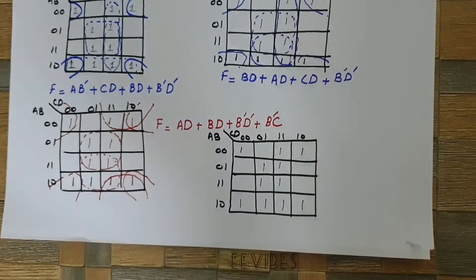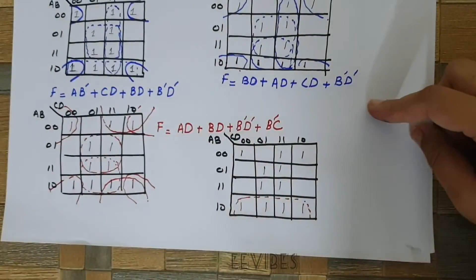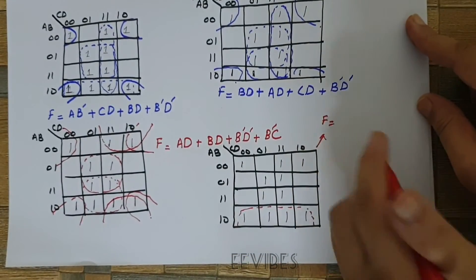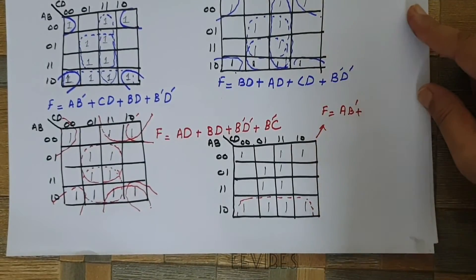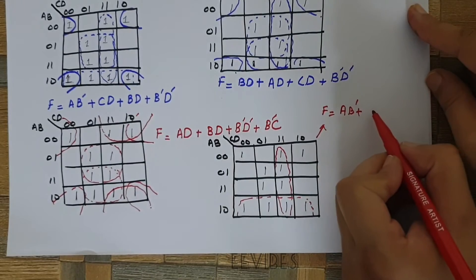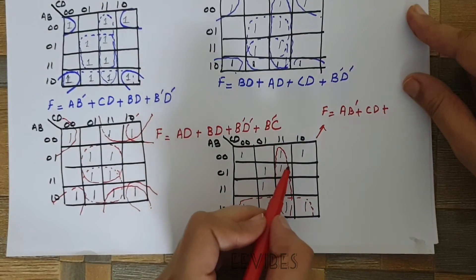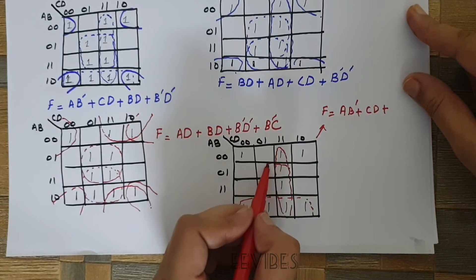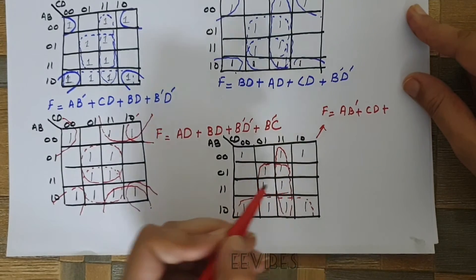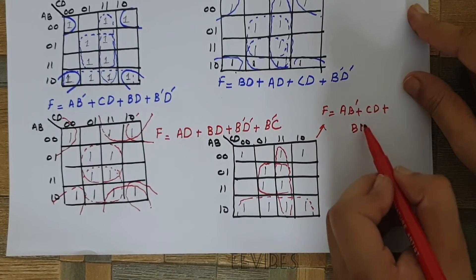Now for the last possible arrangement, the first term combining four adjacent squares is AB'. Combining the ones in the column gives CD. The next combination yields BD, and then D.